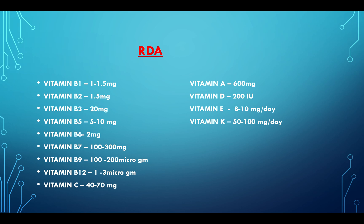RDA values: Vitamin B1: 1–1.5 mg. Vitamin B2: 1.5 mg. Vitamin B3: 20 mg. Vitamin B5: 5–10 mg. Vitamin B6: 2 mg. Vitamin B7: 100–300 mg. Vitamin B9: 100–200 mg.